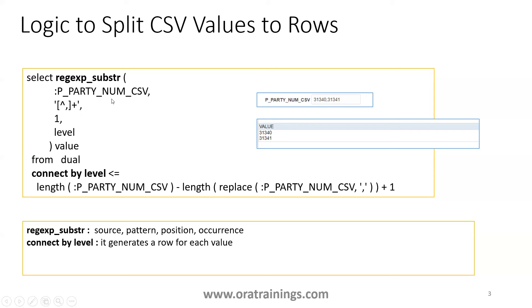P_PARTY_NUMBER_CSV is our input parameter. This particular logic is for finding any string having a comma separated value. In the given input, we have 31340 comma 31341, so it will find the occurrence of a comma and get the value before it.